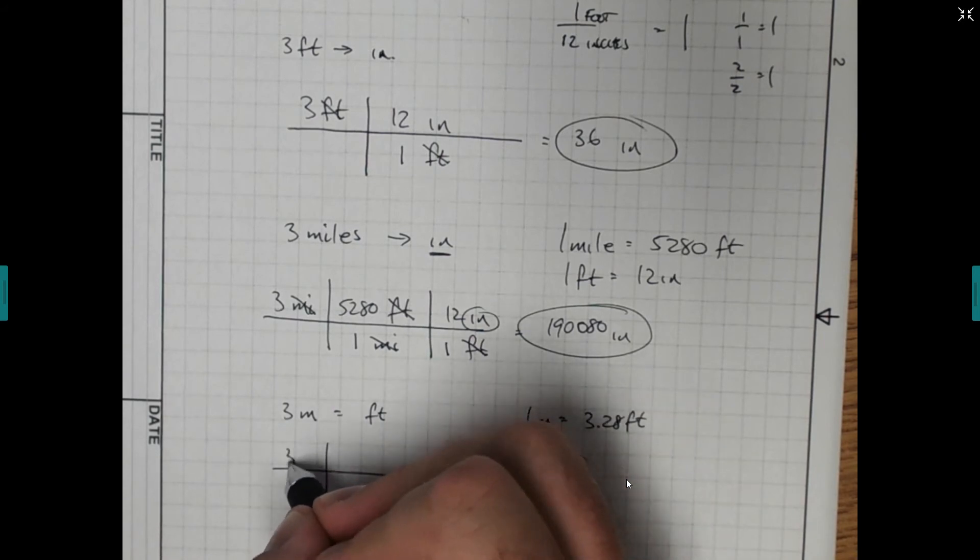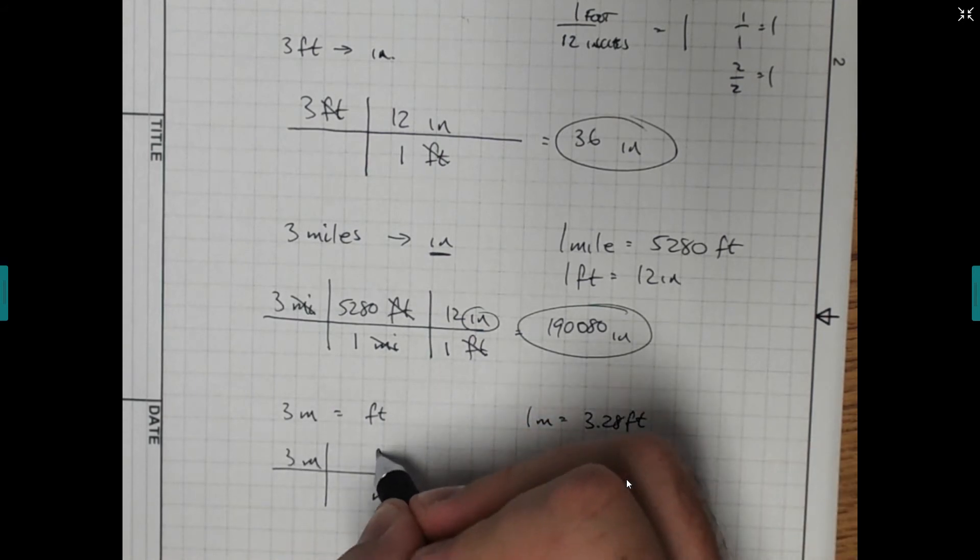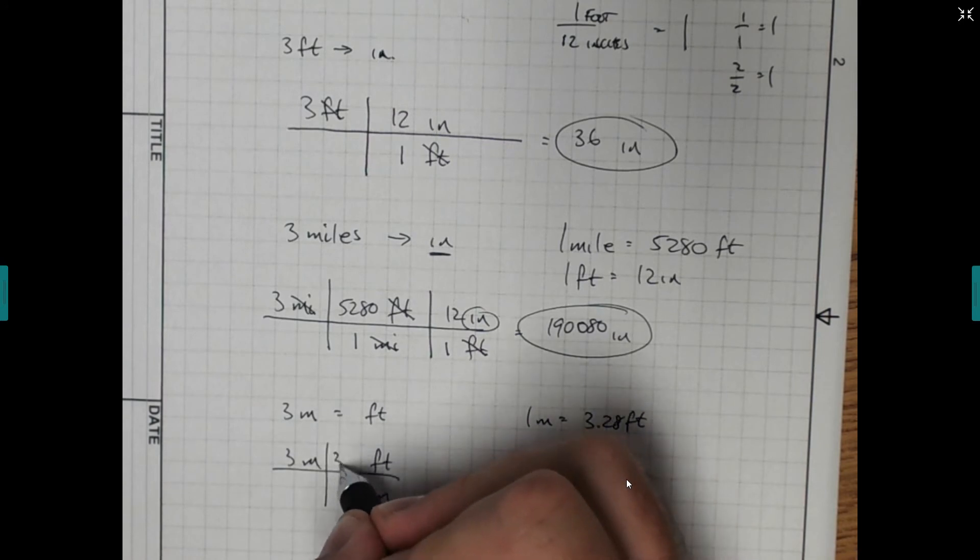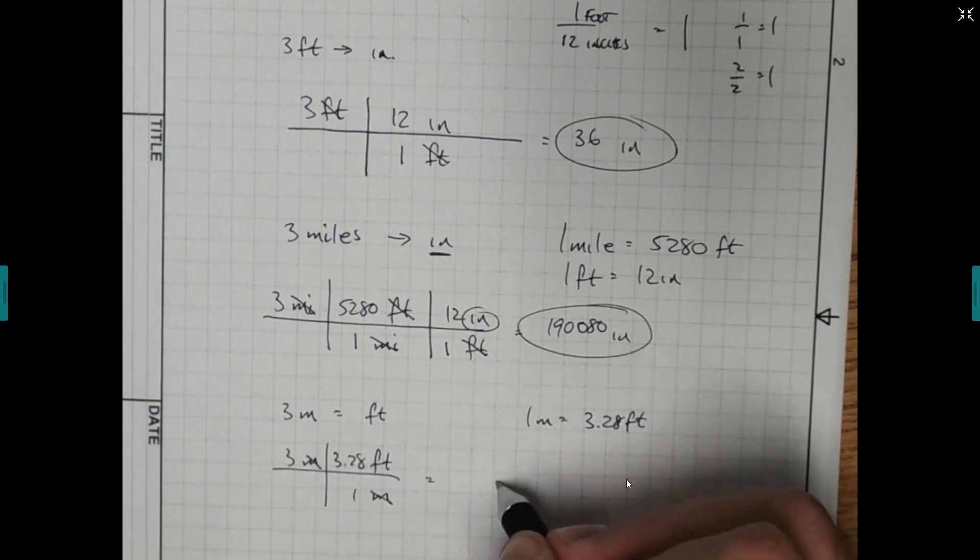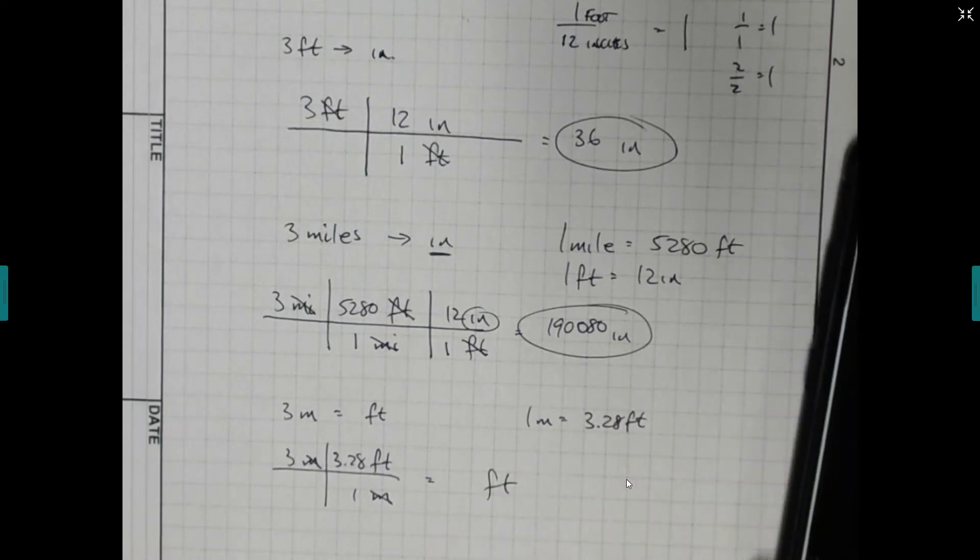1 meter is 3.28 feet. So we start here. We have 3 meters. We're going to put meters in the bottom. The feet go in the top. This is 3.28. This is 1. The meters cancel. Feet is all we have left over.